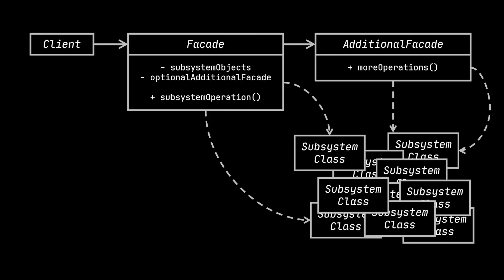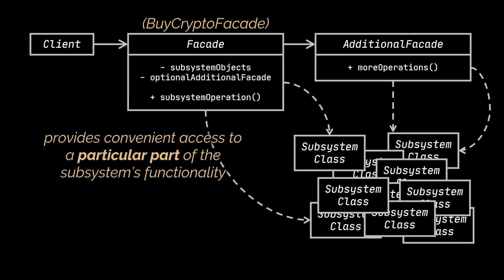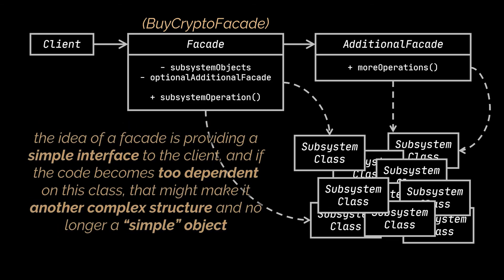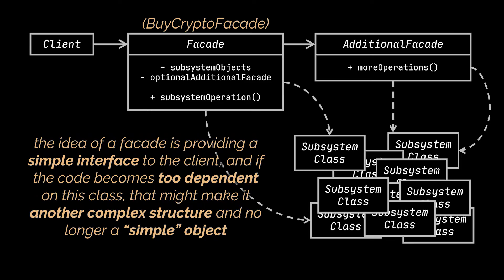The first thing you will notice is the facade itself — represented by the BuyCryptoFacade class in our example. This class provides convenient access to a particular part of the subsystem's functionality; it knows where to direct the client's request and how to operate all the moving parts. Sometimes the facade can grow too big and become a god object, making all of our code depend on it. To avoid that, an additional facade class can be created to prevent polluting a single facade with unrelated features — remember, the idea is providing a simplified interface, and if code becomes too dependent on this class, it may become yet another complex structure.